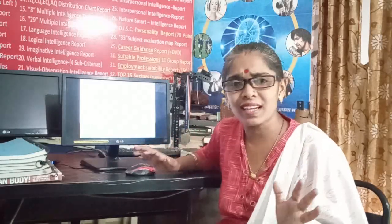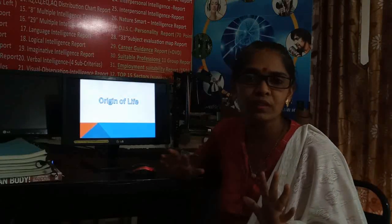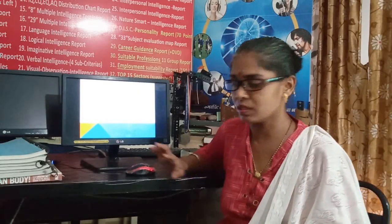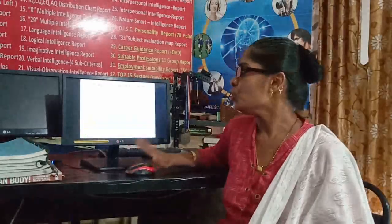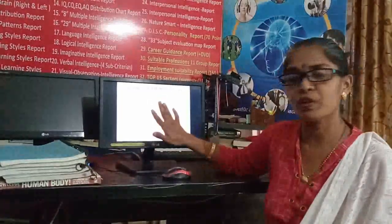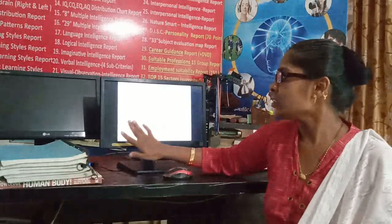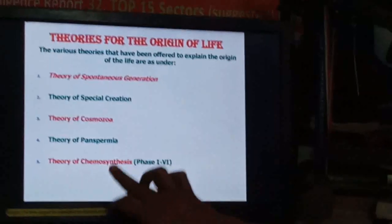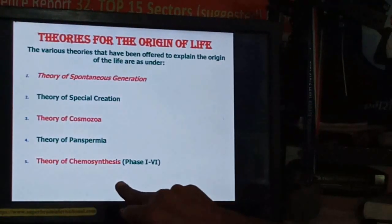Life was not there at all — the climate was very hot, 800 degrees centigrade temperature was there, so no life could occur on the Earth. Now, how was life formed, how did life originate on the Earth? Our next point is the origin of life on the Earth. So many theories are given by different scientists.